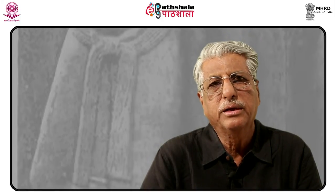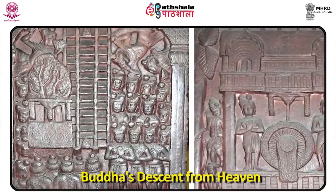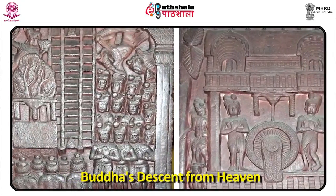In the Mahakapi Jataka depicted on the stupa, Buddha is born as the monkey king of 80,000 monkeys. Once a human king attacks their forest in search of a famous mango tree. To help the other monkeys escape, the Bodhisattva acts as a bridge between two trees on opposite sides of a river. The last monkey to cross is Devadatta — Buddha's evil cousin — who stomps on his back and breaks it. The human king is impressed by the monkey king, cares for him, and the monkey king then teaches the human king good conduct and virtue.